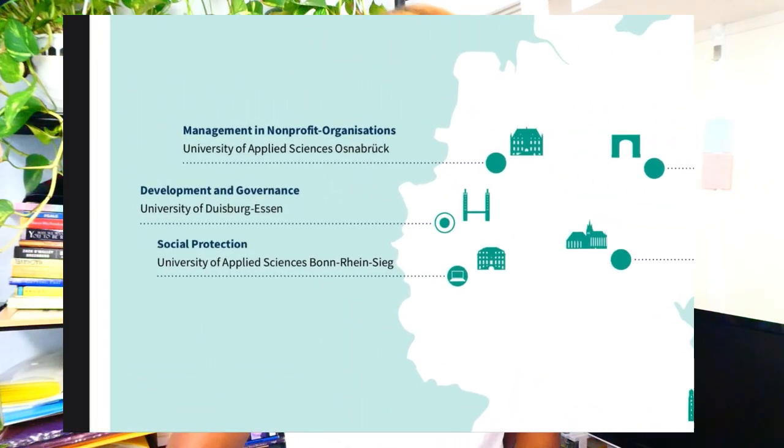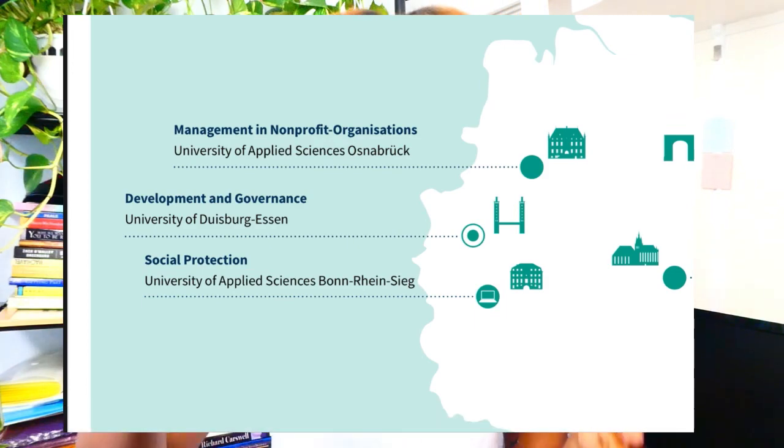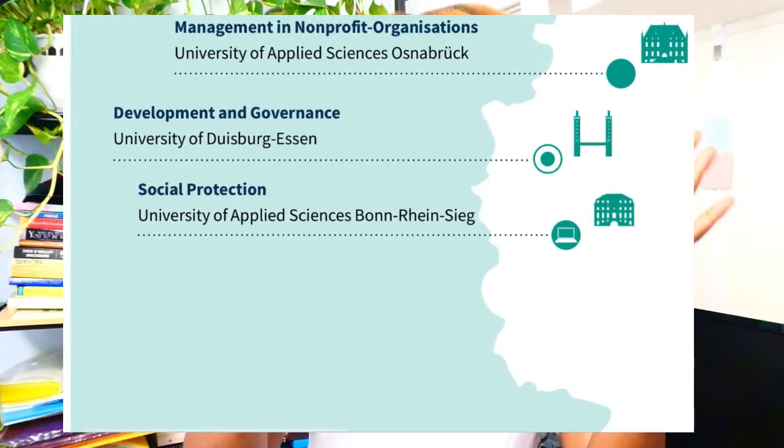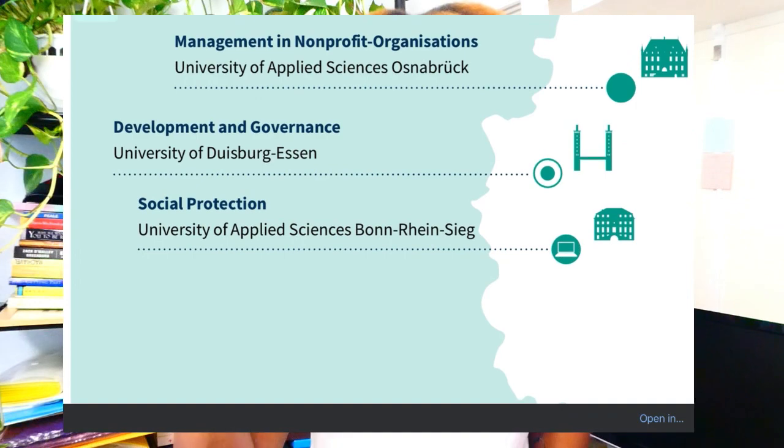Let's look at the first program: Management in Non-Profit Organizations. If you've studied something management-related and are working in non-profits, you can apply for this at the University of Applied Sciences. The next one is the Development and Governance Program at the University of Duisburg-Essen — if you're studying something development or governance related, or working in this field, you should definitely consider applying.